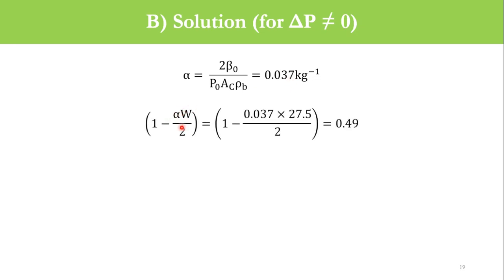(1 - αW/2), so alpha is 0.037, W is 27.5. Accordingly we get this bracket value as 0.49.